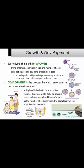Growth and development: every living thing exhibits growth. Living organisms increase in size and number of cells — cells get bigger and divide to create more cells. For example, the legs of a child grow longer as osteocytes divide to create new bone cells, enlarging the femur bones. Development is the process by which an organism becomes a mature adult. A single cell divides to form a cluster; these cells differentiate, taking on specific tasks to form specialized tissues and organs.